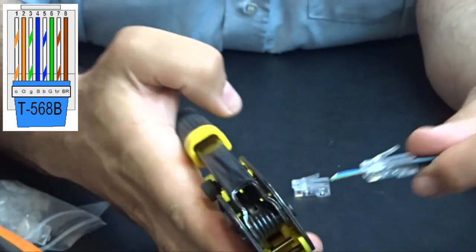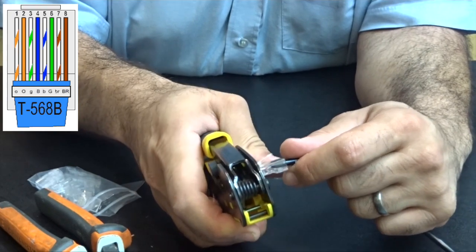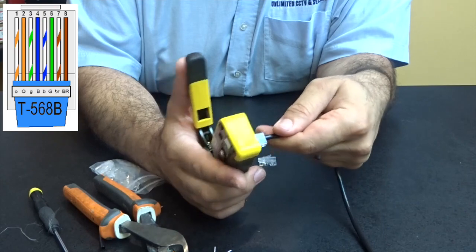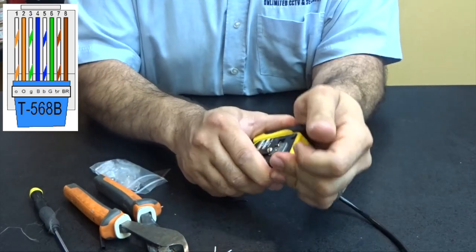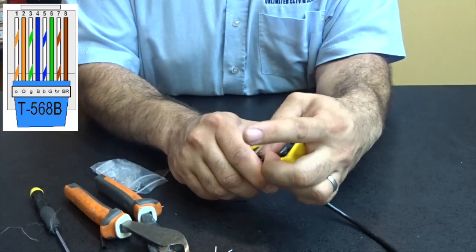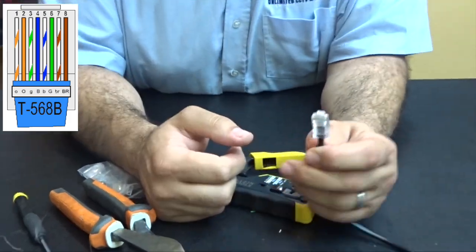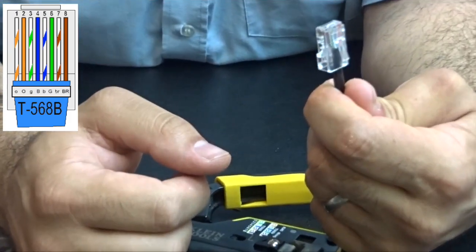I always shorten it by putting it through my crimpers before I crimp it. And with the pass through crimpers you just push it through into your crimper. Crimp. Straight on. And that's your perfectly made RJ45.